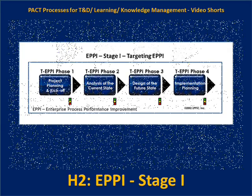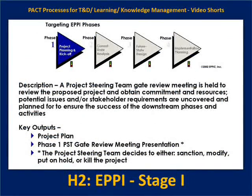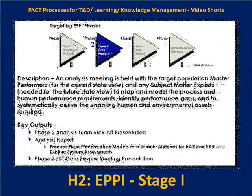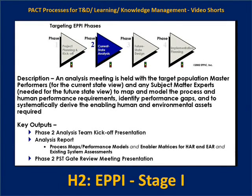In Phase One of targeting EPI, we're doing project planning and kickoff. We're meeting with a project steering team to review a draft of the project plan and getting their commitments — whether to kill the project, put it on hold because it's not timely, modify the approach, or to buy in and sanction it.